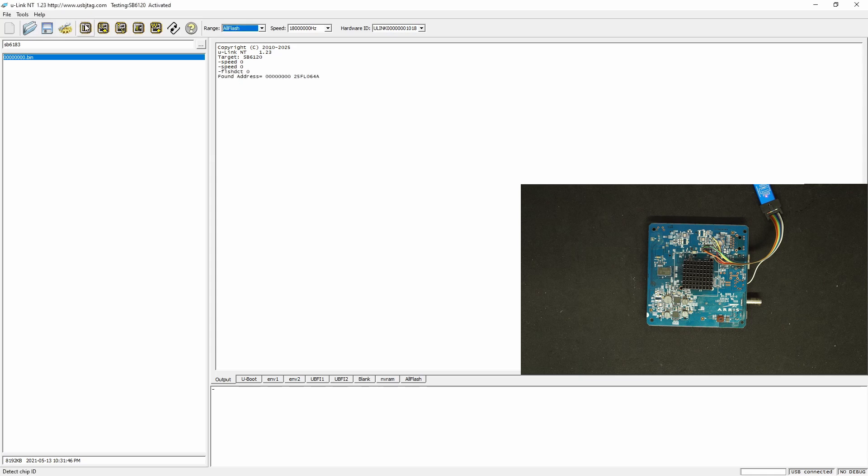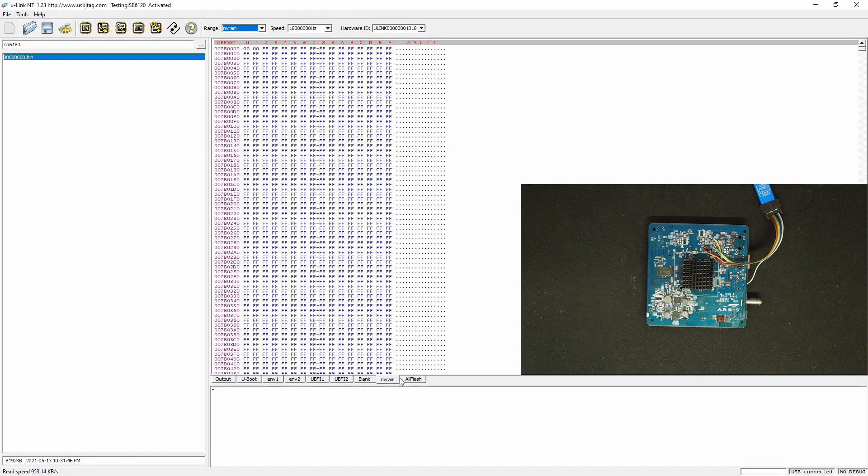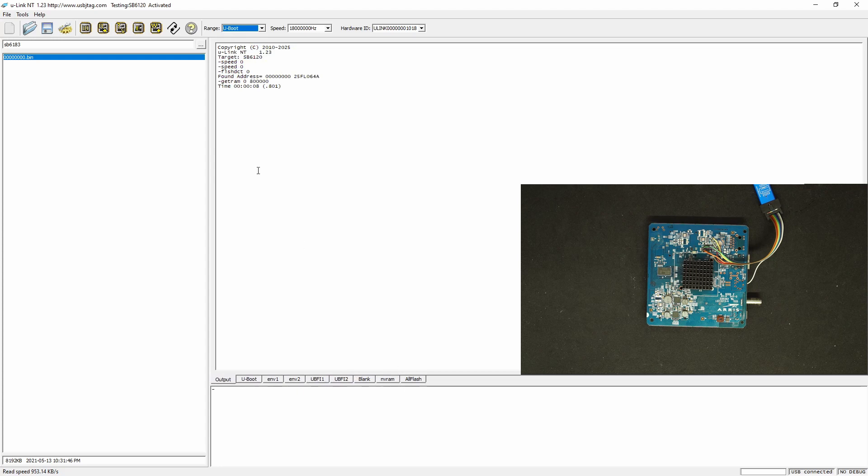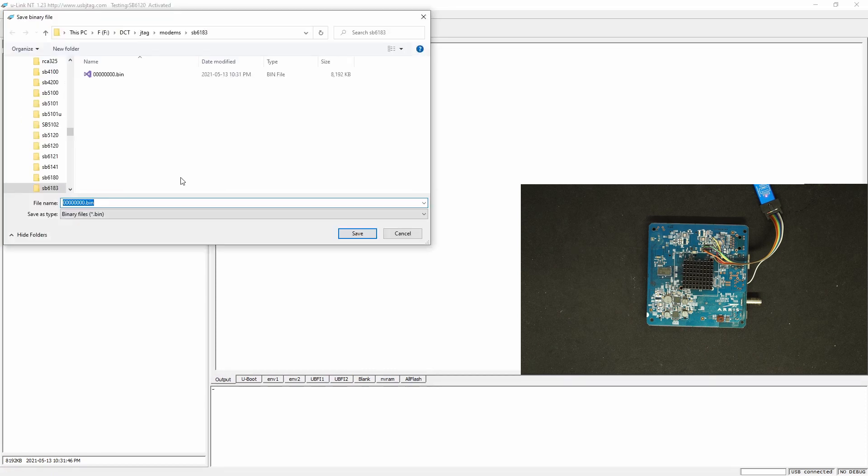So let's first see if we can detect, and the very first thing to do is to back up. Let's read the entire flash. Here are the contents of the flash. We can make a good backup by selecting all flash and save to a file. Let's call it backup.